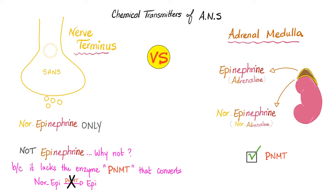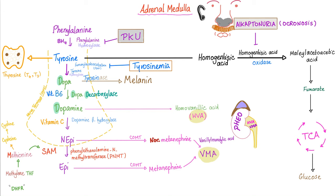The difference between them is just a methyl group, which tells you the importance of SAM in biochemistry, which comes from methionine. If this is your adrenal medulla, you go: phenylalanine → tyrosine → dopa → dopamine → norepinephrine → epinephrine. Why? Because you do have the PNMT enzyme.